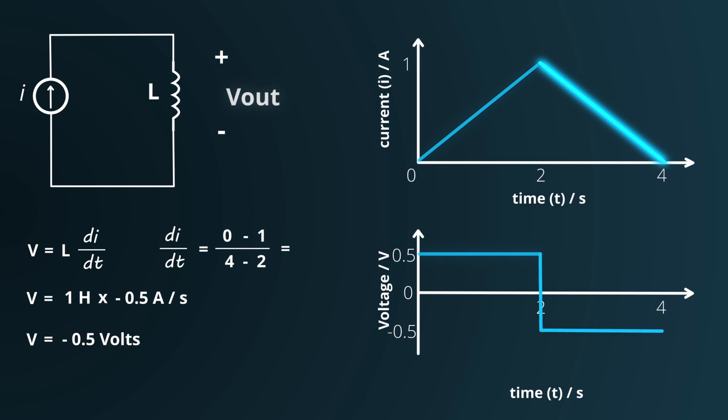Here, the negative sign indicates that the voltage polarity is reversed compared to the first interval. This is due to the decrease in current, which results in an opposing voltage to resist this change.